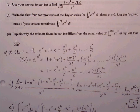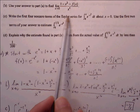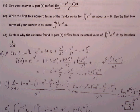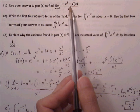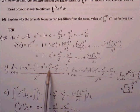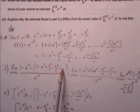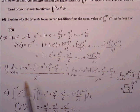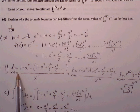Part B: use the answer in part A to find the limit of the given expression. We replace f of x with the polynomial found for e to the negative x squared: 1 minus x squared plus x to the 4th over 2 minus x to the 6th over 6 plus dot dot dot, all over x to the 4th. Before evaluating the limit, we distribute the negative and simplify.